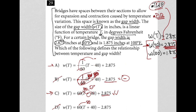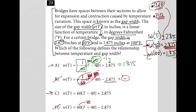I'll erase what I wrote and use the second equation to distinguish A from C: which one gives 1.875 when T is 100? For choice A: 100 minus 40 is 60; negative 1/60 times 60 — the 60s cancel — gives negative 1; negative 1 plus 2.875 is positive 1.875. That works. For choice C: 60 times 60 is 3,600, and 3,600 plus 2.875 is definitely not 1.875. So choice C is eliminated.